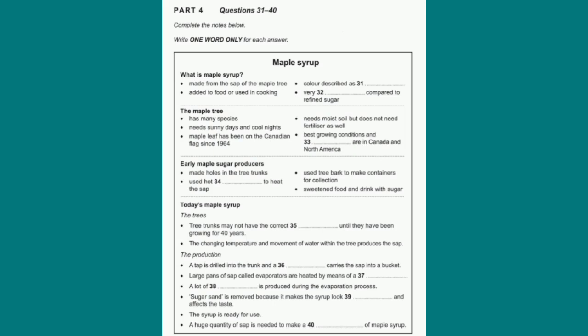Maple syrup is a thick, golden, sweet-tasting liquid that can be bought in bottles or jars and poured onto foods such as waffles and ice cream, or used in the baking of cakes and pastries. It contains no preservatives or added ingredients, and it provides a healthy alternative to refined sugar. There are many species of maple tree, and they'll grow without fertilizer in areas where there's plenty of moisture in the soil. However, they'll only do this if they must have full or partial sun exposure during the day and very cool nights.